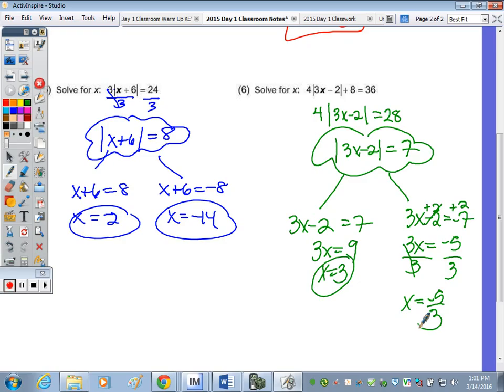Just to go back and double check these real quick, by plugging the two here, two plus six is eight. Absolute value of eight is eight, times three is twenty-four. Absolute value of negative fourteen plus six is negative eight. Absolute value of that is a positive eight. Still works out. Over here, three times three is nine minus two is seven. Absolute value of seven is seven. Four times seven is twenty-eight, plus eight is thirty-six. What about three times negative five-thirds? What happens in the threes when you're multiplying? What can you do with the threes? Cancel them out, and now I have negative five minus two is negative seven. Negative seven times four, or the absolute value of negative seven is a positive seven. Times four is twenty-eight plus eight is thirty-six. So they both work.